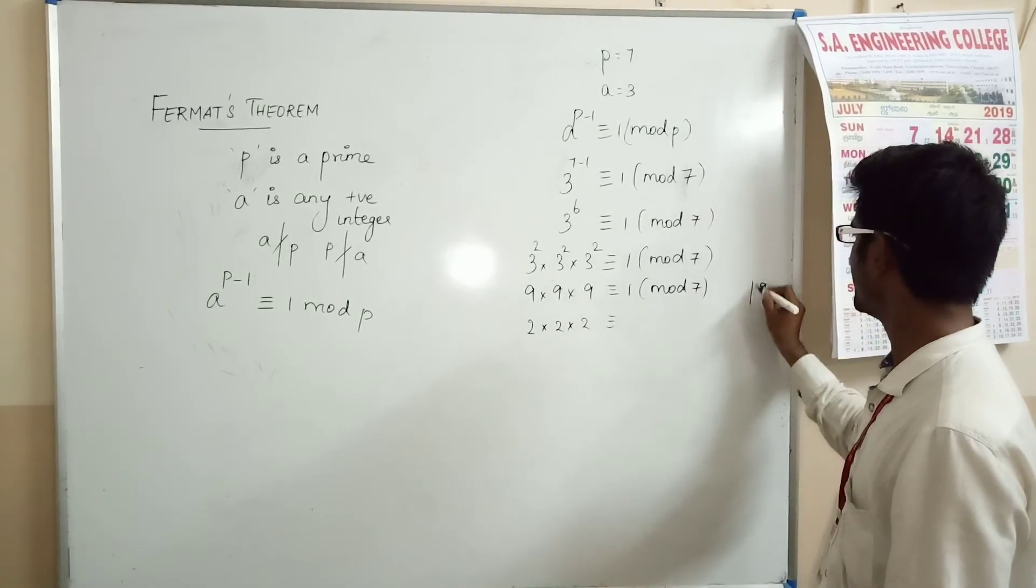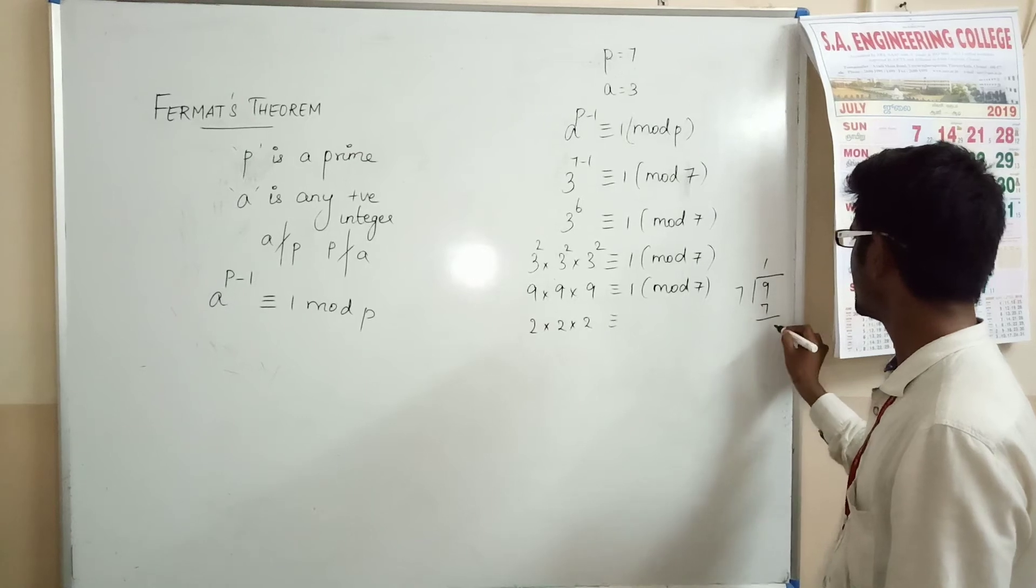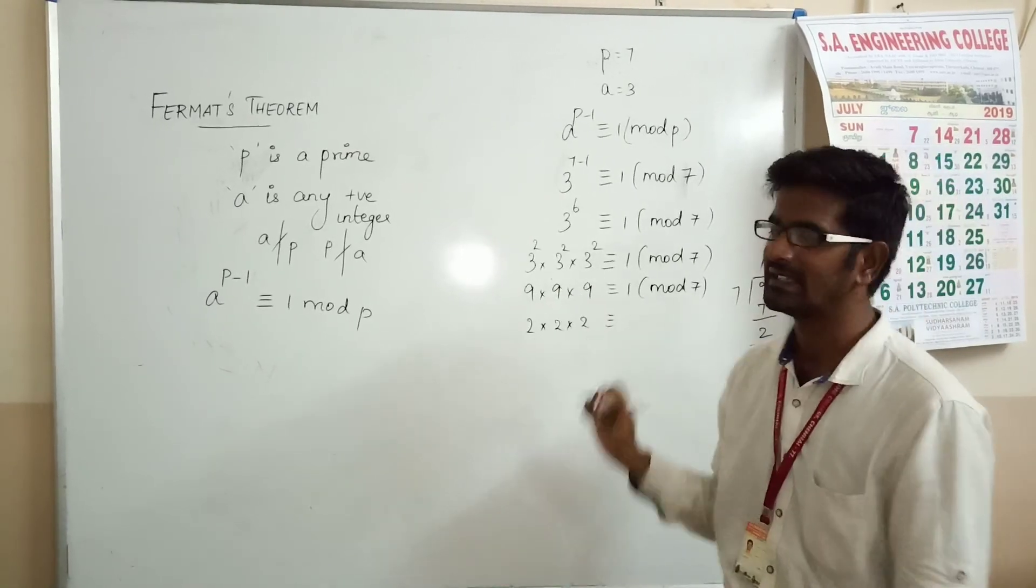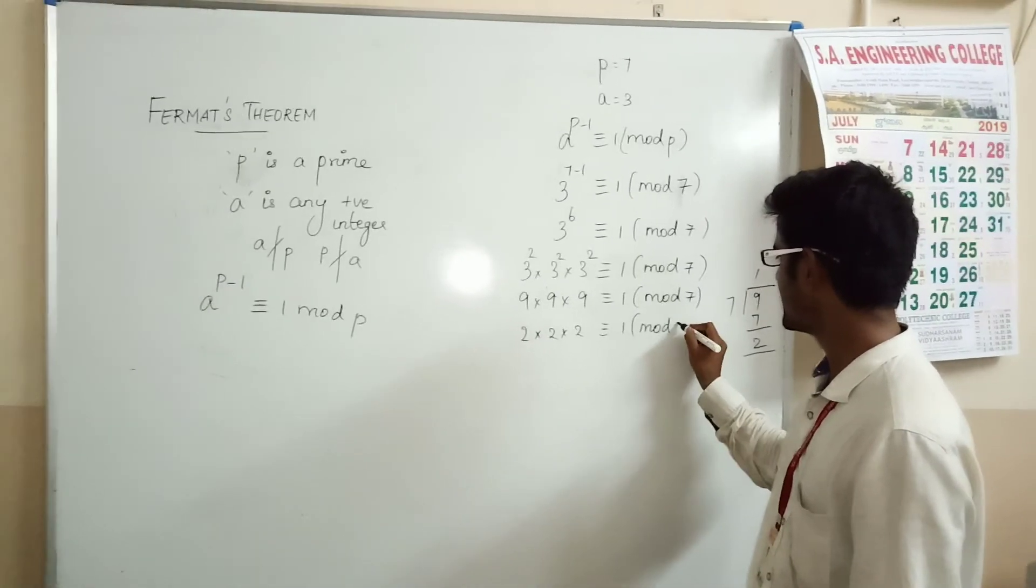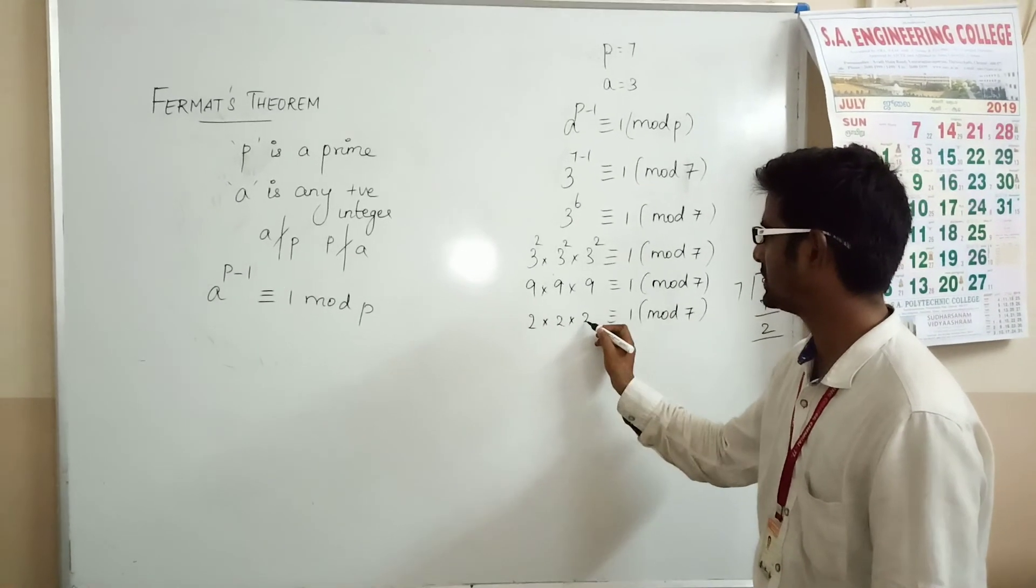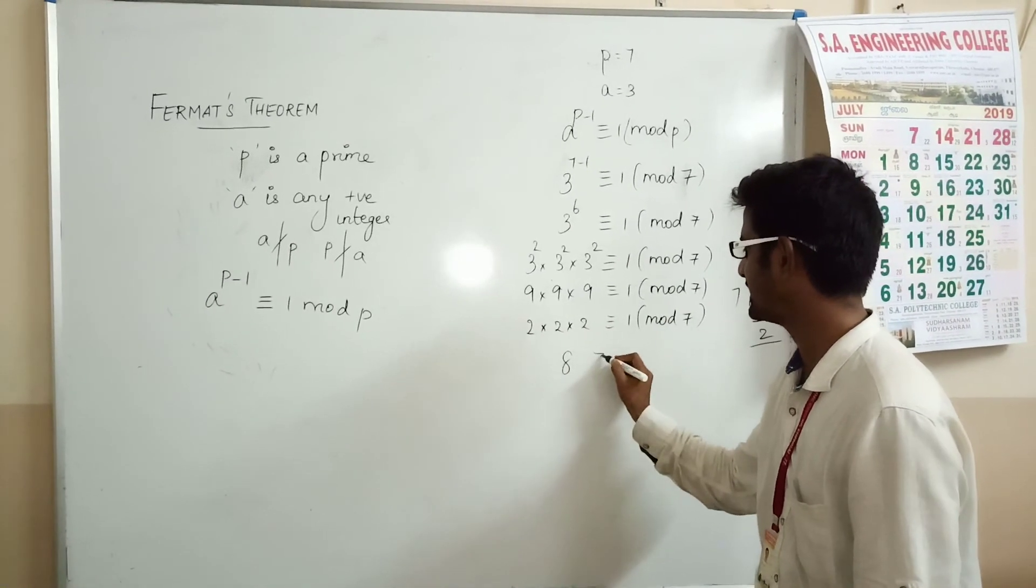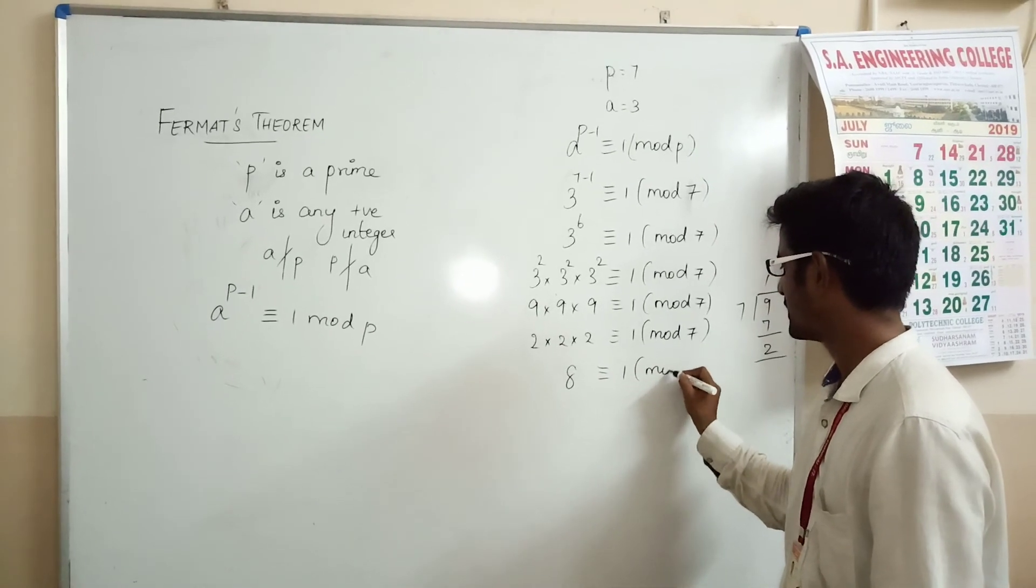This means 9 when divided by 7 gives remainder 2. You are just replacing it with the remainder. 2 × 2 × 2 = 8 is congruent to 1 mod 7.